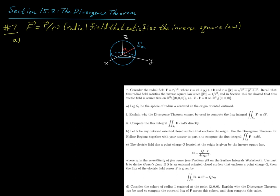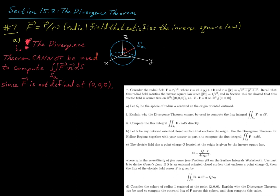Part a says: let S_a be the sphere of radius a centered at the origin, oriented outward. Part one asks us to explain why the divergence theorem cannot be used to compute the flux integral of the vector field over S_a. The divergence theorem requires that the vector field be defined and that the component functions have continuous first-order partial derivatives over the solid region enclosed by the surface. The origin is in the region enclosed by our sphere S_a, and since the field is not defined there — evaluating at the origin gives division by zero — the divergence theorem does not apply.